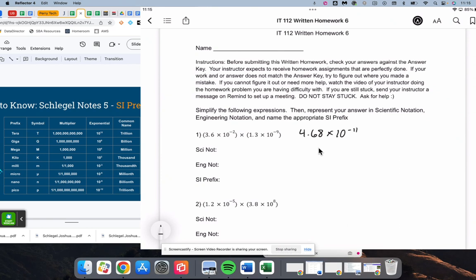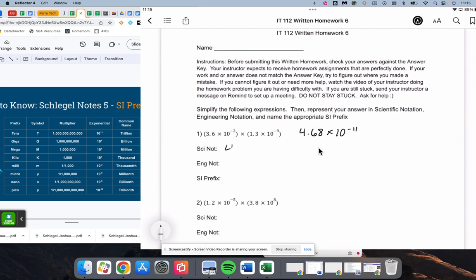So we've got 4.68 times 10 to the negative 11, and that is correct for scientific notation because there's only one number in front of the decimal there.